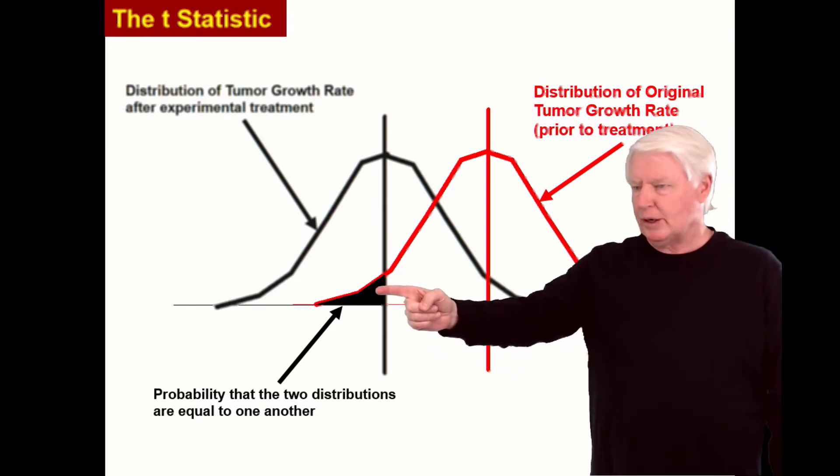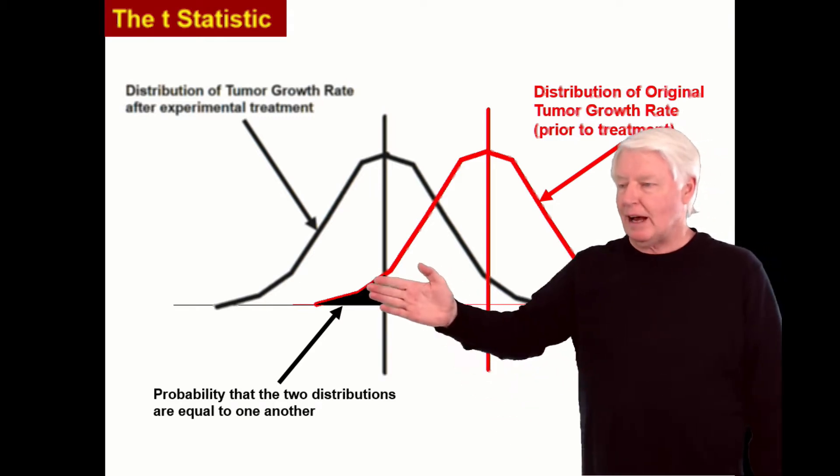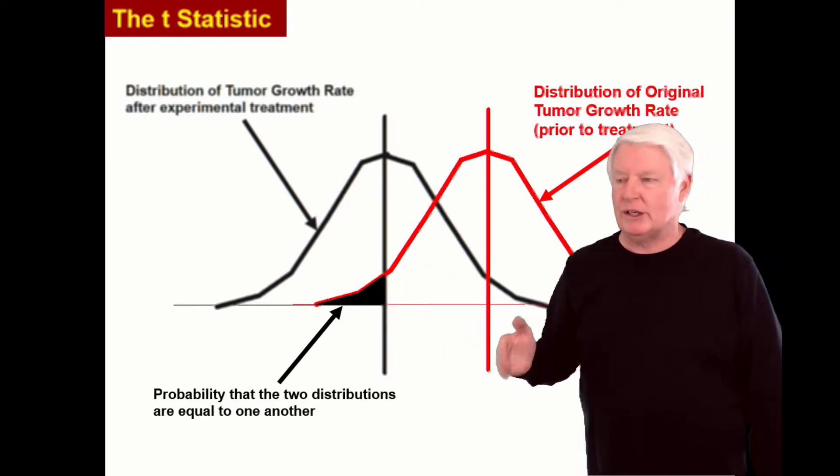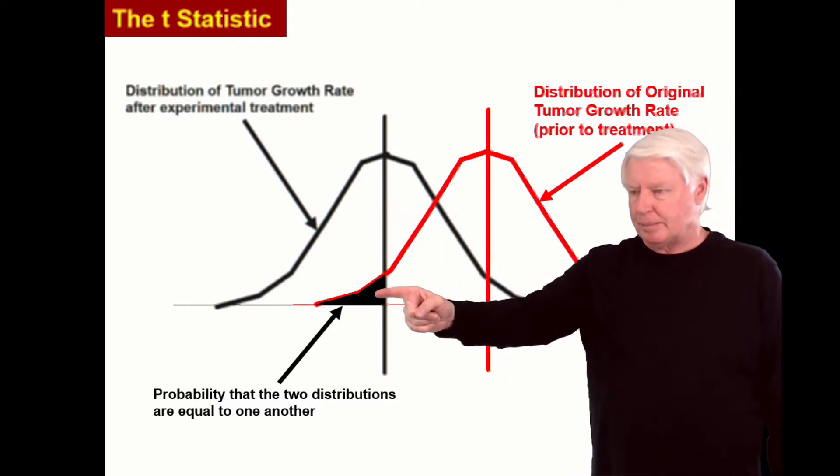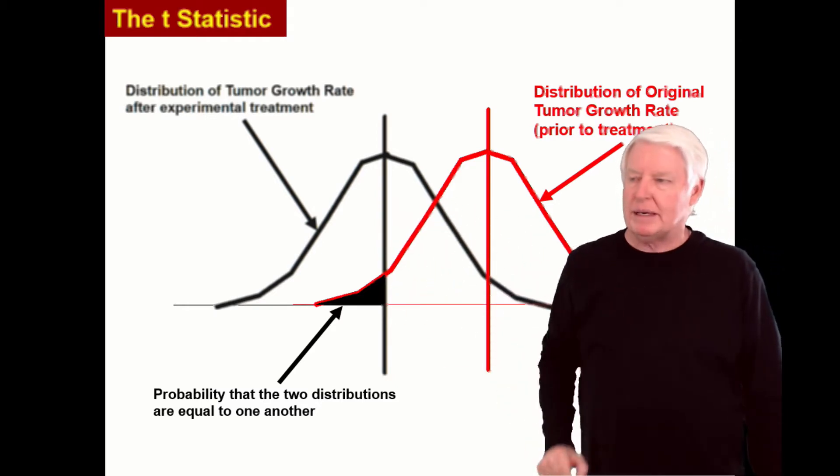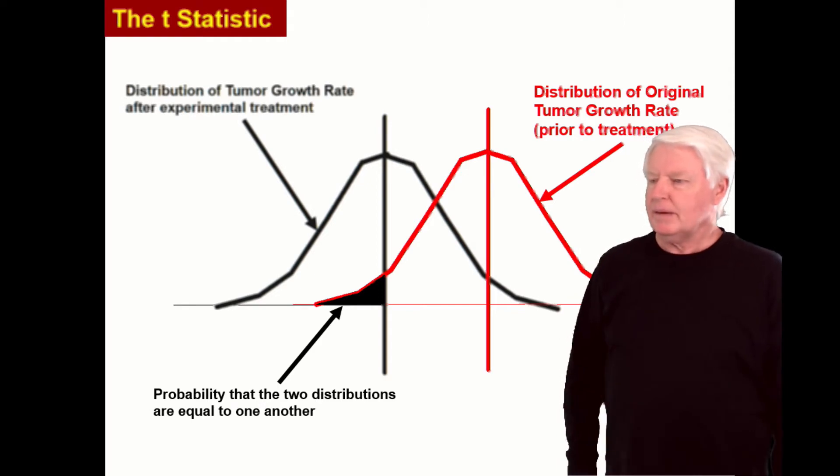If we put it in the computer it spits out a p-value, which is the probability that you're wrong when you say something changed. The p-value is the probability that you're wrong. We call that the p-statistic.